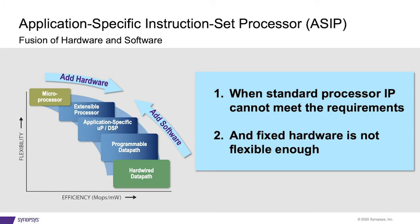So why would you design your own processor in the first place? Well, there are two main reasons. First, you cannot find a standard processor that matches your specific requirements. And second, you cannot go with fixed function hardware implementations as you need the flexibility offered by a programmable solution. With an ASIP, you're indeed looking for the right balance between hardware efficiency and software flexibility.